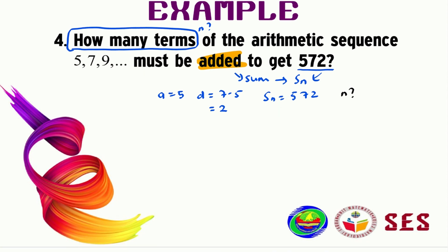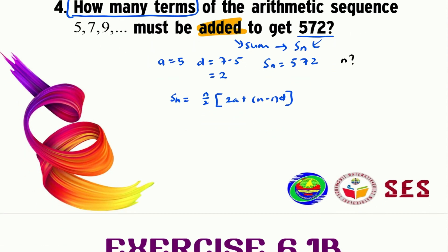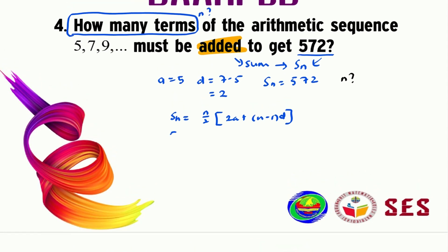In doing so, we will substitute everything into the Sn formula and try to get the n value. So what we have here is Sn equals n over 2 times (2a plus n minus 1 times d). Our Sn is equal to 572. n is the one that we are looking for.